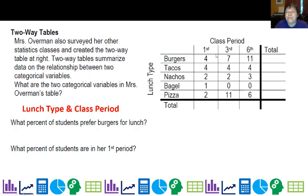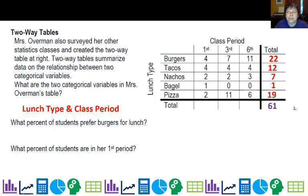The categories for lunch type are things like burgers and tacos — those are the categories for this categorical variable. And class period, with categories first, third, and sixth. So what percent of students prefer burgers for lunch? I'm going to go ahead and fill in these margins — that's part of one of the things we need to learn. I'm going to create a distribution here: this is a distribution for first period, this for third, this for sixth. I add up across to figure out the total number of kids who like burgers and tacos, and I find there are 61 kids total.